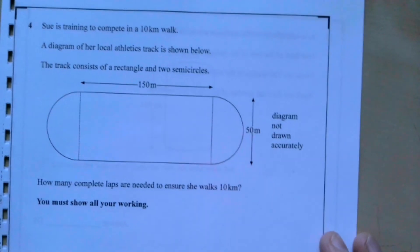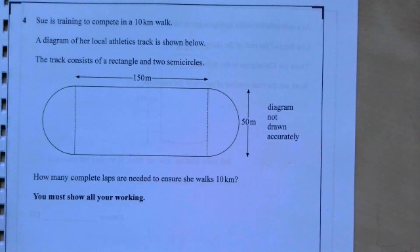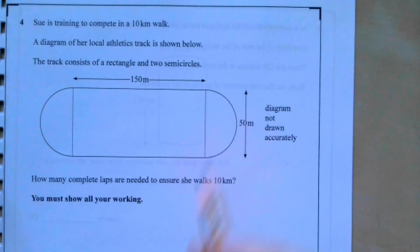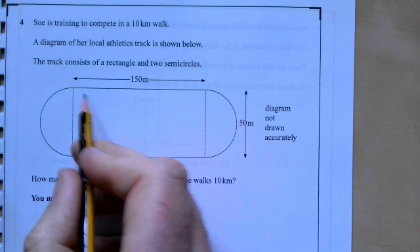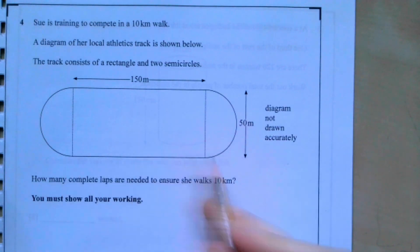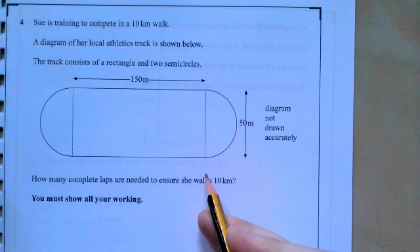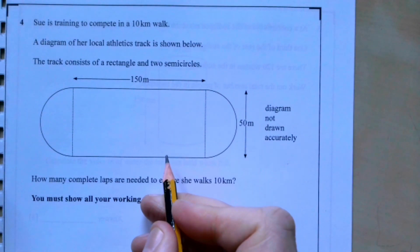Question four: Sue is training to complete a 10 kilometre walk. The athletics track consists of a rectangle and two semicircles. We need to work out the distance around the track — the two straight sides are 150 metres each, and the two semicircles together make a full circle.